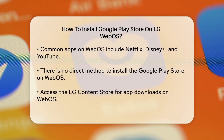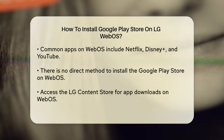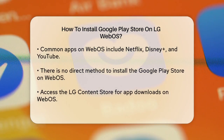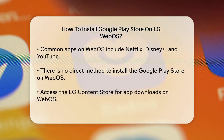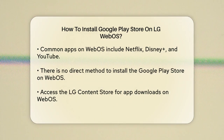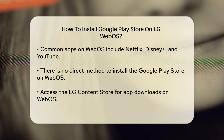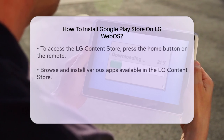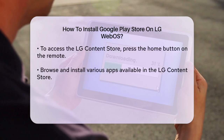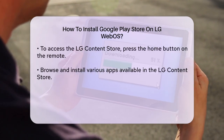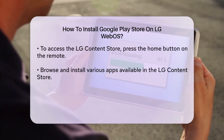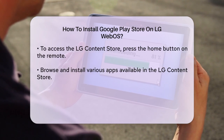For LG TVs running on WebOS, there's no direct way to install the Google Play Store. Instead, you can use LG's own App Store, known as the LG Content Store. Here's how you can access it: press the Home button on your LG Smart TV remote, navigate to the LG Content Store app, and once inside, you can browse, download, and install a variety of apps available for WebOS.